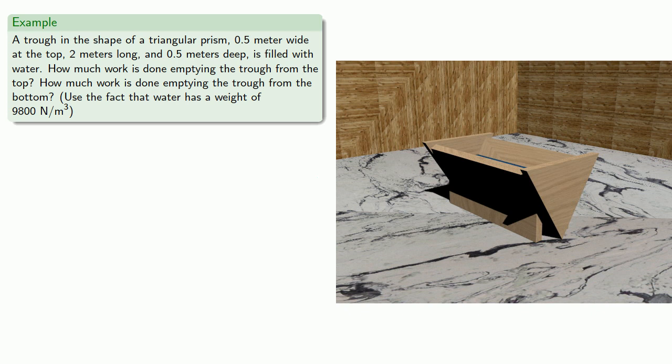Maybe we can poke a hole in the bottom. In this case, the emptying water actually does work, so we might look at how much work is done emptying the trough from the bottom. For this, we need to use the fact that water has a weight of 9,800 newtons per cubic meter.